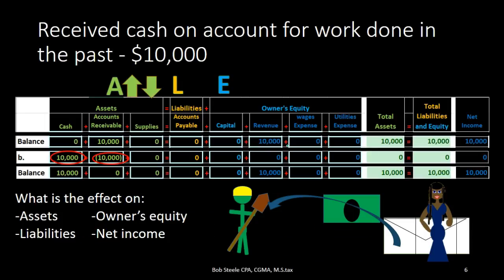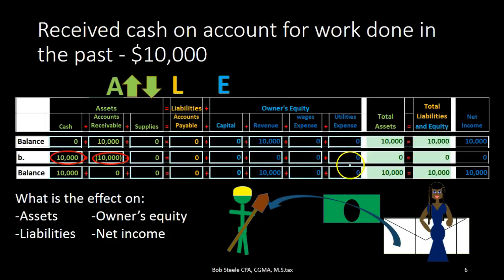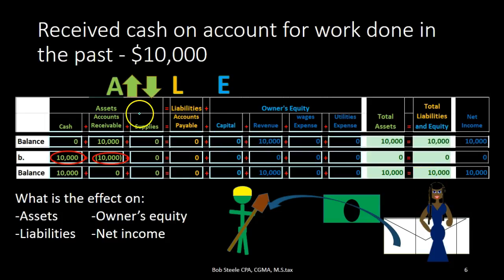We can bring these numbers down and add up the full accounting equation. Cash was zero plus ten thousand, so we're at ten thousand now. Accounts receivable was ten thousand minus ten thousand, now we're at zero. Supplies, accounts payable, and capital all brought down to zero. Revenue was at ten thousand — nothing happened this time, still at ten thousand. Wages and utilities brought down as zeros. Left-hand side: ten thousand plus zero plus zero equals ten thousand. Right-hand side: zero plus zero plus ten thousand revenue plus zero plus zero equals ten thousand. Assets equal liabilities plus equity — both for the transaction and the balance after the transaction.